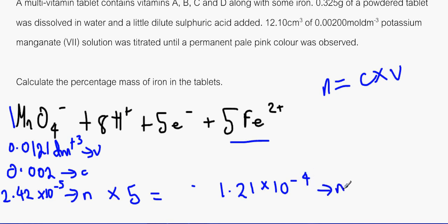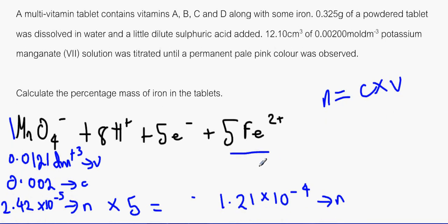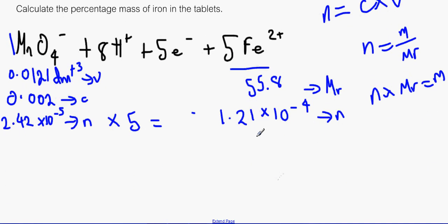Now what we need to do, we have got the number of moles here and we need to find out the mass of this. We have also got the MR. We know what the MR is. If we look at the periodic table it tells us that the MR is 55.8. And using the n = m / MR, and then rearranging it to make n × MR = m, we can find out what the mass is of the ion in there. So let's do that. Very quickly, that would be 1.21 × 10⁻⁴ × 55.8, and that would make 0.00675 grams.